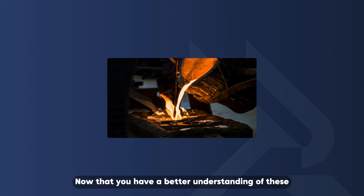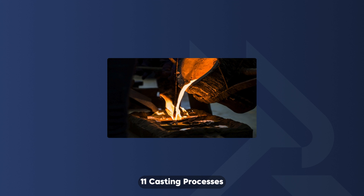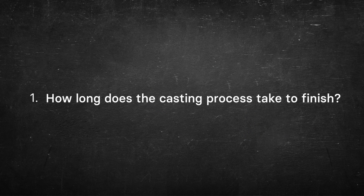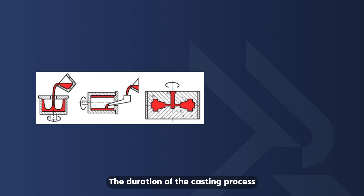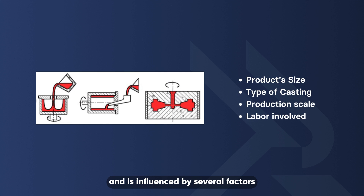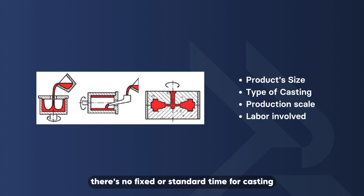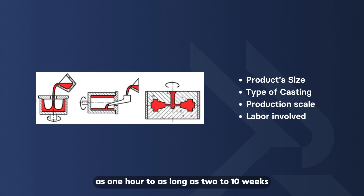Now that you have a better understanding of these eleven casting processes, you might have some questions. Two common ones are: how long does the casting process take to finish? The duration of the casting process can vary significantly and is influenced by several factors including the product's size, type of casting, production scale, and labor involved. There's no fixed or standard time for casting. It can range from as little as one hour to as long as two to ten weeks, depending on these variables.